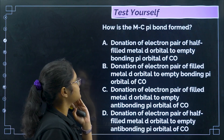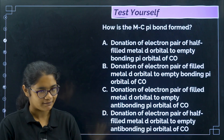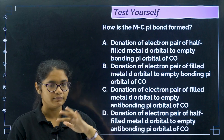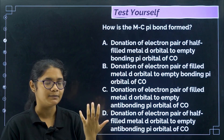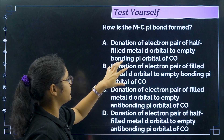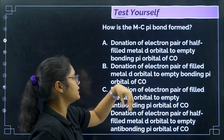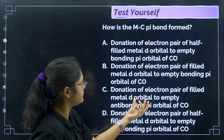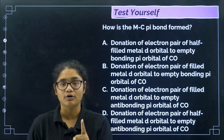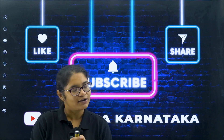Homework question: how is the metal-to-carbon pi bond formed in metal carbonyls? Which orbitals are involved? The options involve donation of electron pair from half-filled or filled metal d orbitals to empty bonding or anti-bonding π orbitals of CO. Read the options carefully, try the question, and comment your answers.